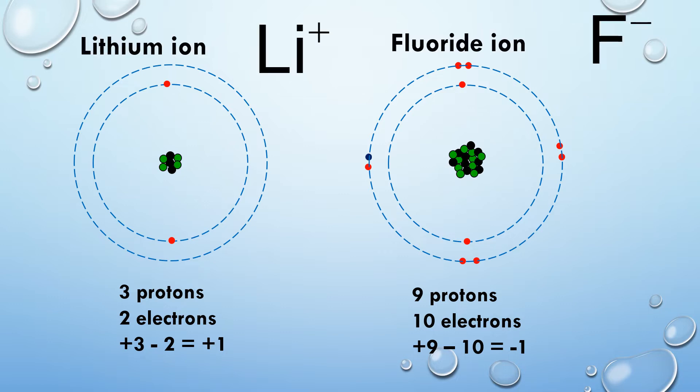Therefore we get these symbols for the ion. The lithium has a 1+ at the top because it has a charge of 1, and the fluoride has a minus because it has a charge of minus 1.